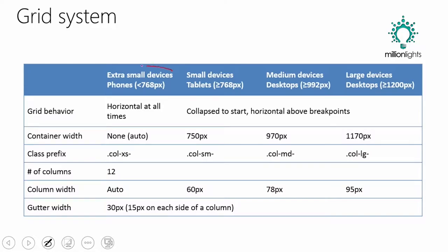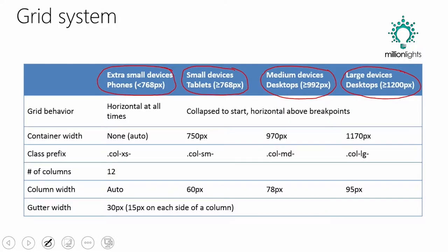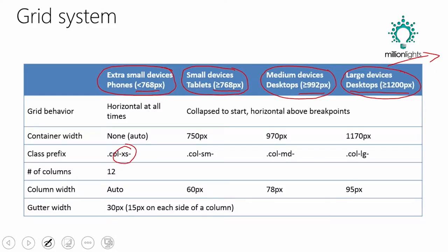I want to highlight a couple of quick things about the Grid System. First, you're going to notice that there are four different device sizes out of the box. In theory, you could go in and add more media selectors, but before you do that, ask yourself why — do you really need this? Those four general device sizes are: less than 768 pixels (extra small), 768 up to 991 (small), 992 up to just shy of 1200 (medium), and 1200 and beyond (large).